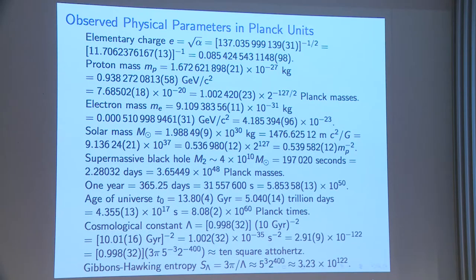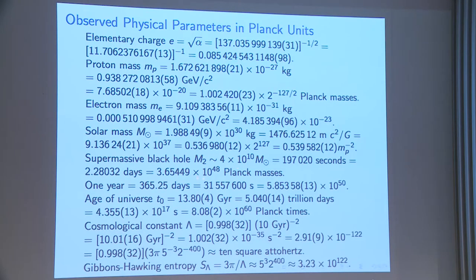In Planck units: the elementary charge is roughly that, the proton mass is about 10 to the minus 20, the electron mass is 10 to the minus 23, the solar mass is roughly 10 to the 37, and the supermassive black hole I'll take is roughly that. A Julian year used by astronomers is that value, the age of the universe is about 5 trillion days, and the cosmological constant is very close to 10 square attohertz. The Gibbons-Hawking energy is also very close to this number.